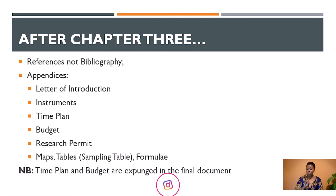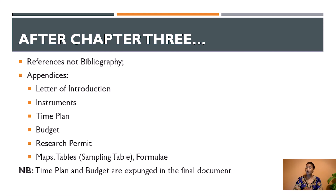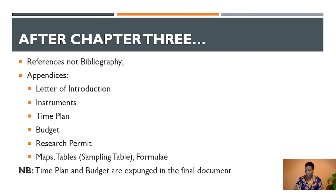After the references, you have appendices. Appendix 1 is a letter of introduction or letter of transmittal where you introduce yourself to your respondents and explain why you are conducting research. After that, from Appendix 2 onwards, you include the instruments you have: a questionnaire for group A, questionnaire for group B, interview guide for group C, document analysis guide for group D, and so on. Once you have completed the instruments, the next appendix is your time plan — when you will be doing what — then the budget, research permit, and maps and tables used in your document.